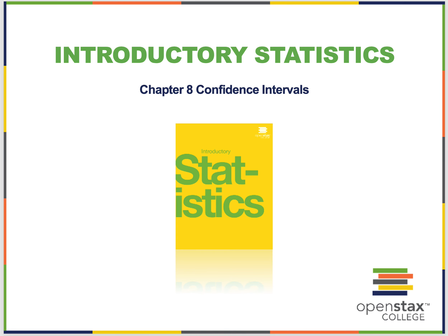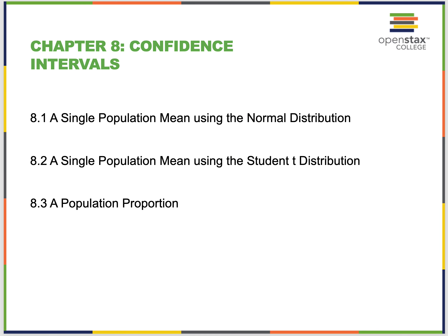Hello, class. This is Professor Gore. We're going to cover Chapter 8 on confidence intervals. There are three sections: single population mean using the normal distribution, a single population mean using the student T distribution, and a population proportion.